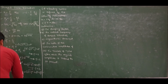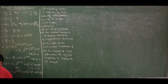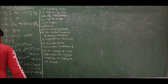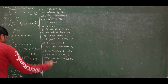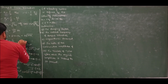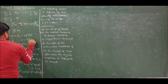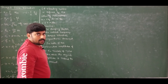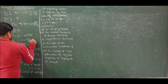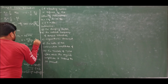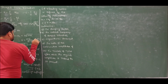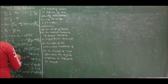The damped natural frequency omega_d is given by sqrt(1 - zeta^2) * omega_n. Logarithmic decrement delta is given by 2*pi*zeta divided by sqrt(1 - zeta^2). From the definition of logarithmic decrement, it can also be written as ln(x1/x2).